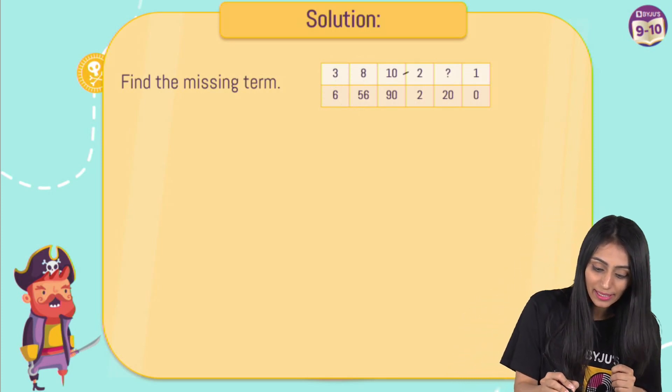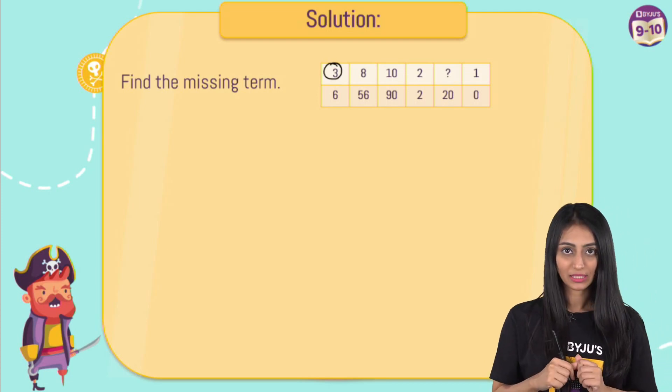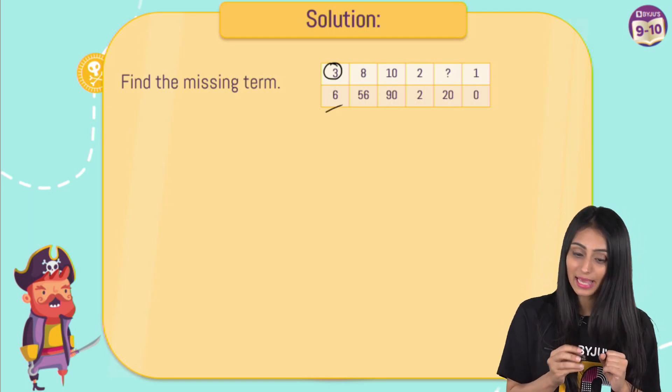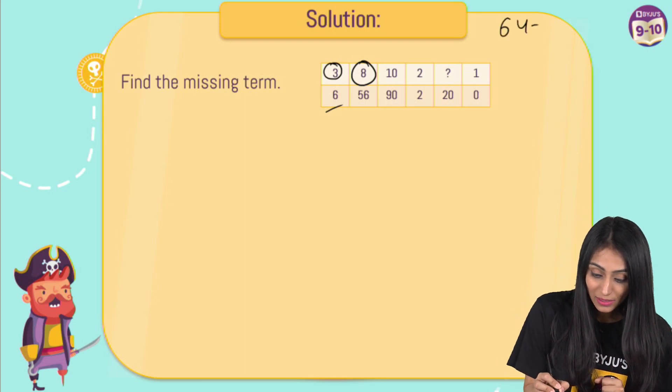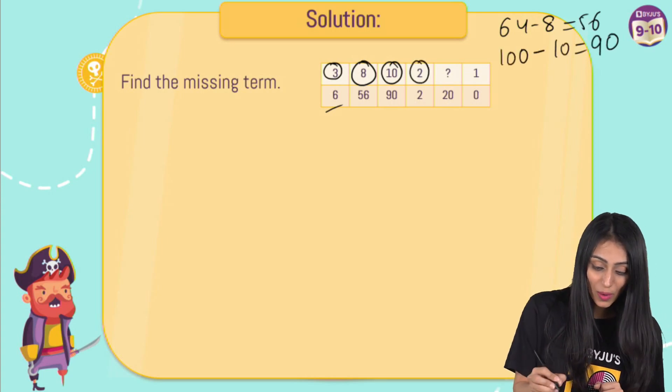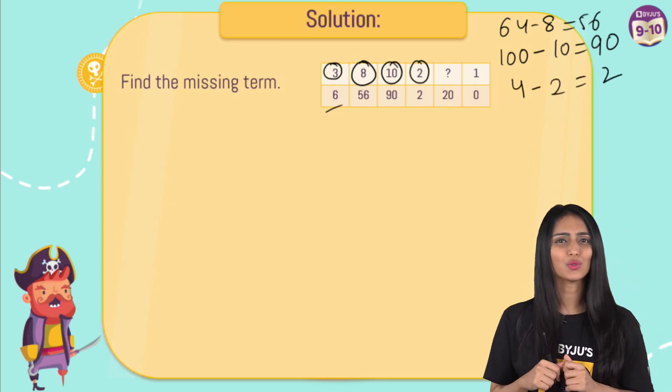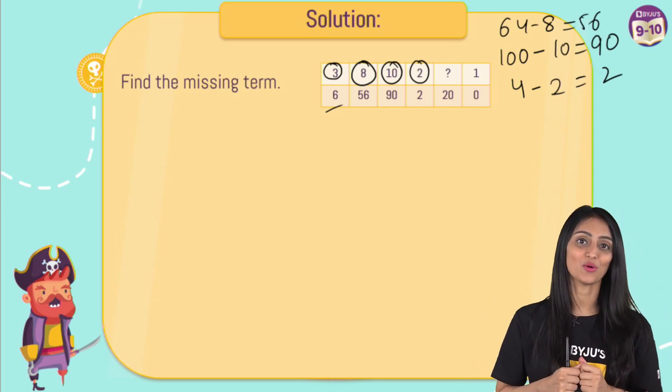And here we have got 10 and then it is 90. So every time if you see, if I do square of three, which is nine and I subtract this three from it, I get six. If I do square of eight, which is 64 and I subtract this eight from it, I get 56. Similarly, if I take square of this 10, which is 100 and I subtract 10 from it, I get 90. Similarly, square of two, which is four and I subtract two from it, it gives me two. So I can see that it is applicable on all of these. So this is what the pattern is over here.